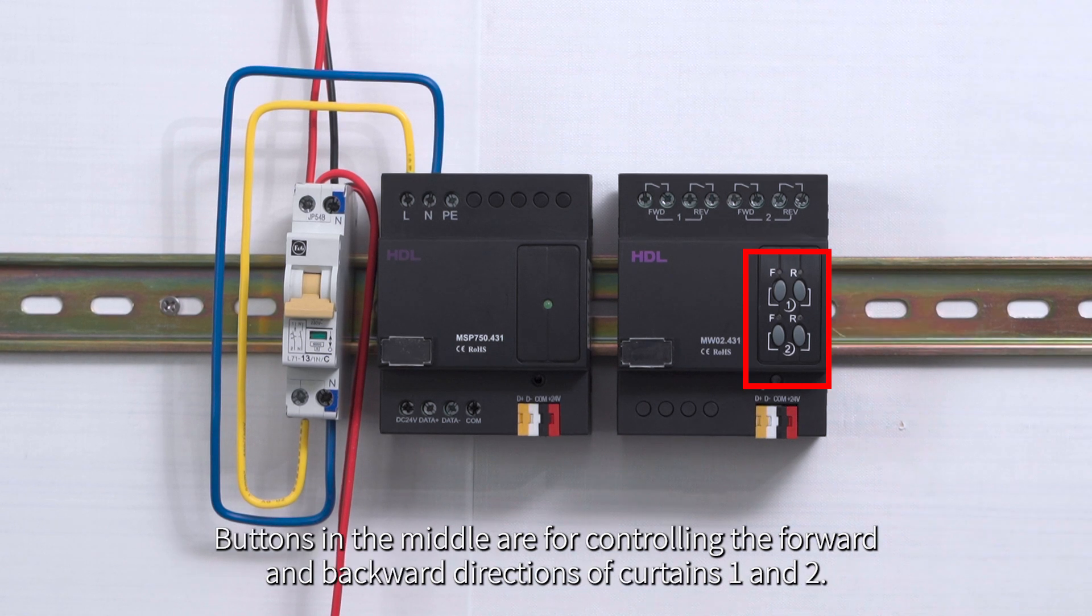Buttons in the middle are for controlling the forward and backward directions of Curtains 1 and 2.